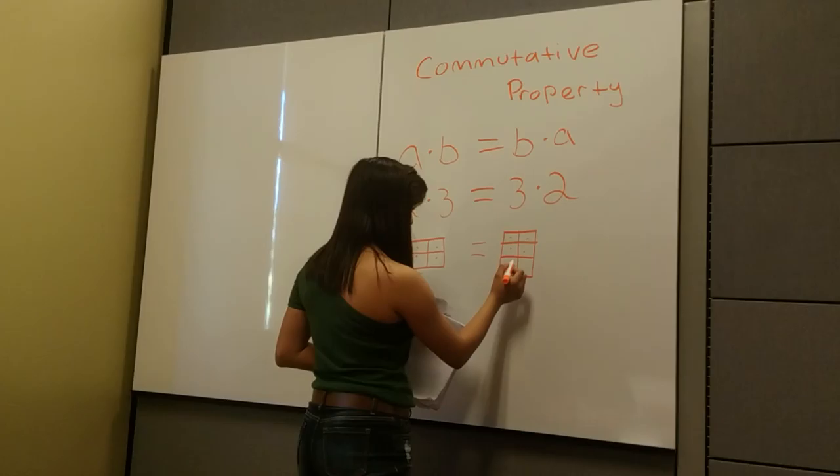So if you count the squares in this picture, 1, 2, 3, 4, 5, 6, you'll see that the answer is 6. And if you count the squares in this picture,